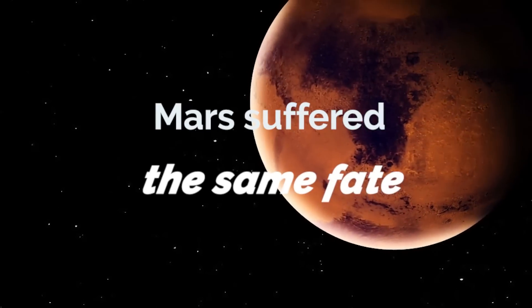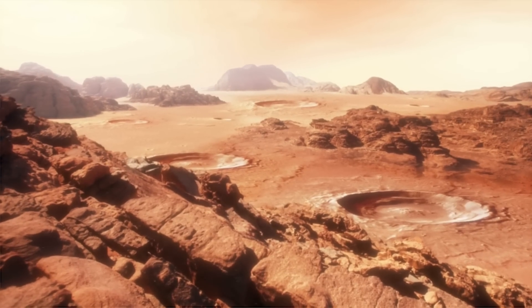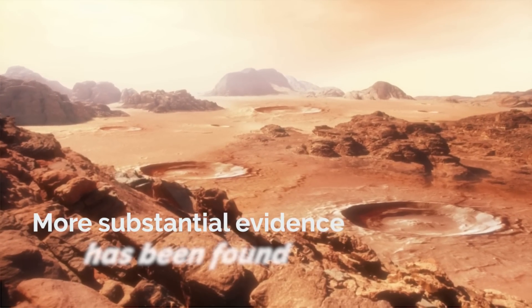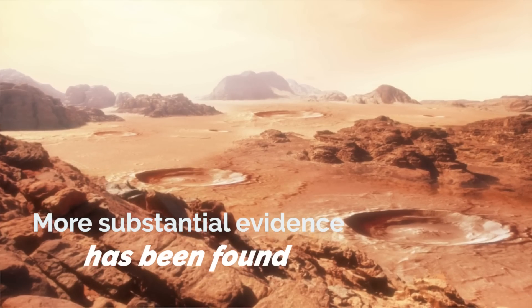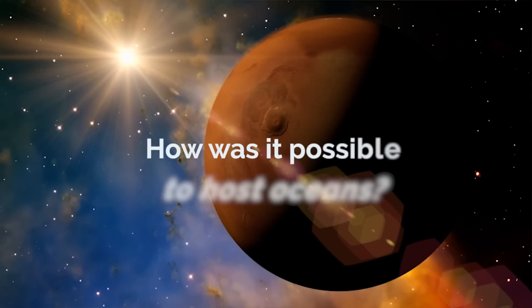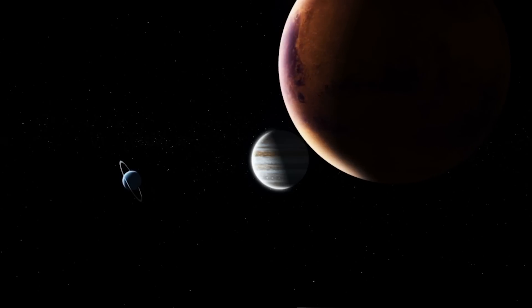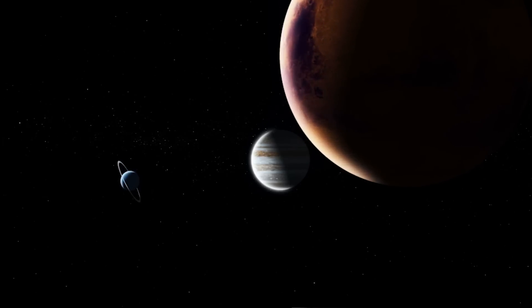Mars suffered the same fate. Like Venus, Mars has likely been like Earth. But in the case of Mars, much more substantial evidence has been found both on its surface and in its atmosphere. How was it possible for Mars to host oceans if the red planet is farther from the sun than Earth, and billions of years ago the sun generated less heat than today?